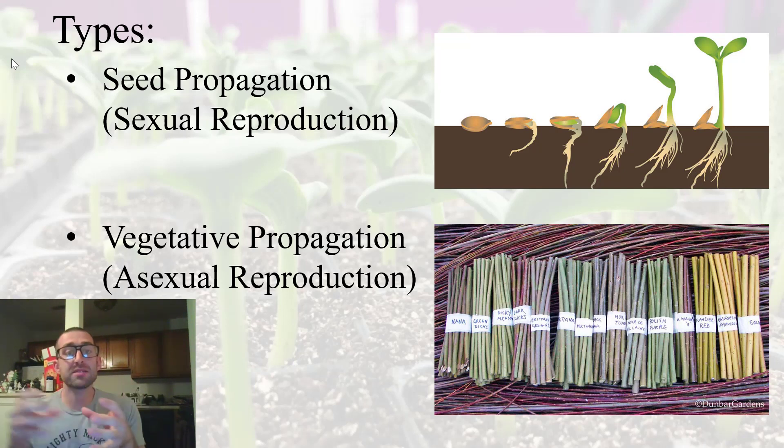Now, the new plants that are produced through vegetative propagation are clones of each other. So they have the same genetics, they have the same phenotypic traits. And again, that has implications for propagation and why we do certain things. And we're going to go into that in this course.